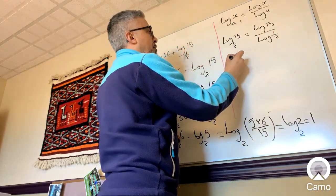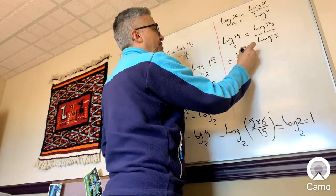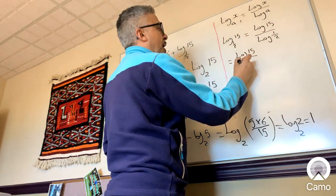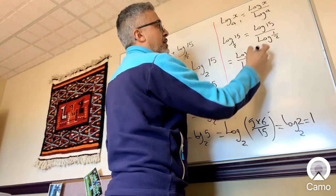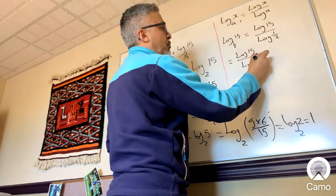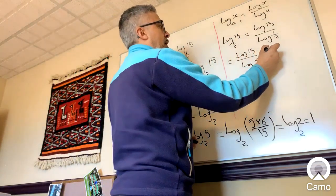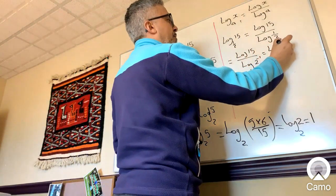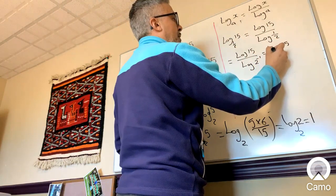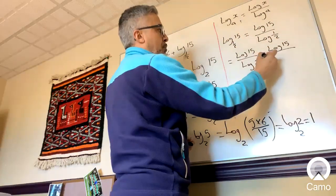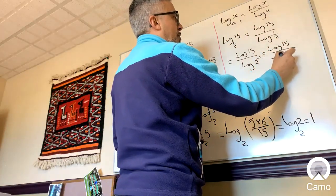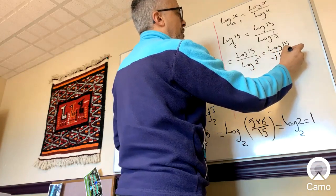Which in turn becomes log 15 over, I'm going to change the 1/2 to 2 to the negative 1, because 1/2 is really 2 to the negative 1. And then it's going to be log 15, and I'm going to bring the exponent down, so that's negative 1 log 2.